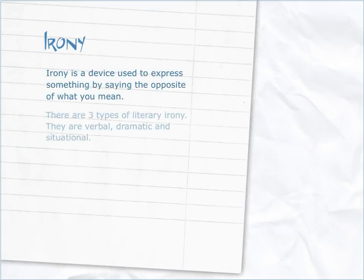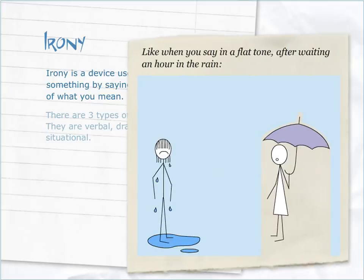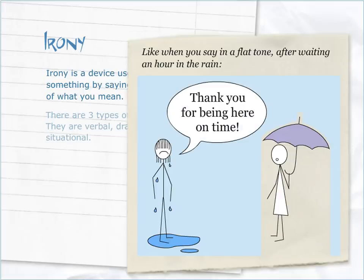Irony is a device used to express something by saying the opposite of what you mean. Like when you say in a flat tone after waiting an hour in the rain, 'thank you for being here on time.'